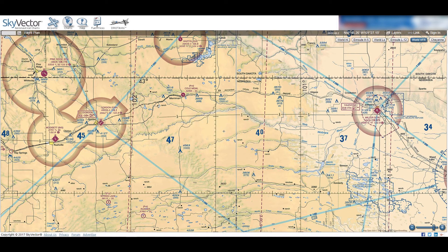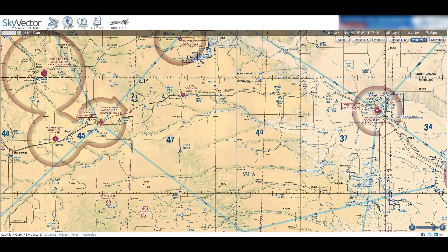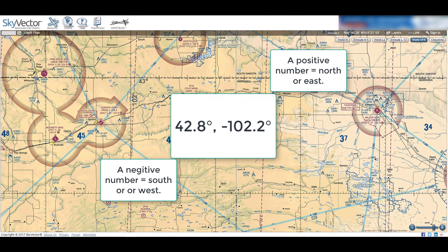You may also get questions on the Part 107 exam that are the reverse of this, where you are given the coordinates and asked to find the name of the site. Furthermore, the FAA sometimes uses decimal degrees instead of degrees and minutes. If you need to measure latitude and longitude using decimal degrees, use the minute ticks to estimate one hundredths of a degree instead of minutes. In our example using Gordon, the airport's coordinates in decimal degrees are 42.8 degrees by negative 102.2 degrees.